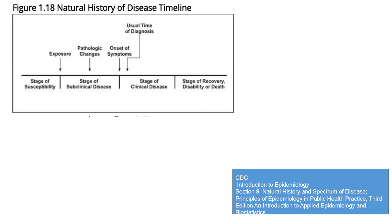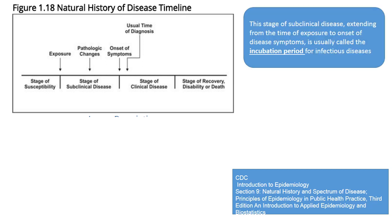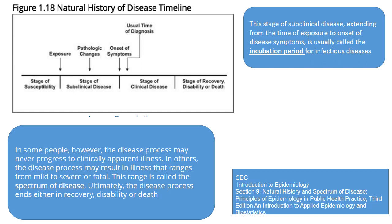Let's spend some time on the natural history of disease timeline to understand the principles behind some of the preventive measures advised. When you get exposed to COVID-19 and you are a susceptible person, the virus starts multiplying in your body but you may have no symptoms. It takes some time for symptoms to develop. This stage of subclinical disease — from the time of exposure to the onset of symptoms — is called the incubation period. The disease process may never progress to clinically apparent illness in some, while in others it may result in illness ranging from mild to severe or fatal.